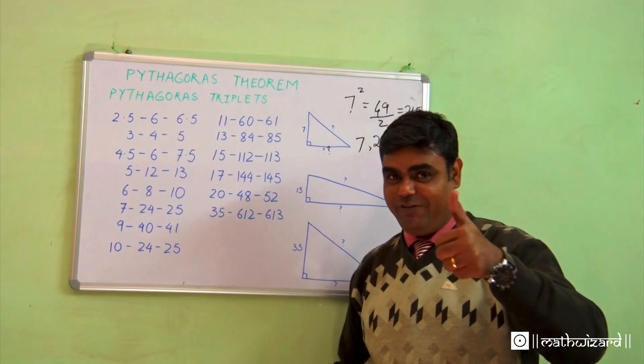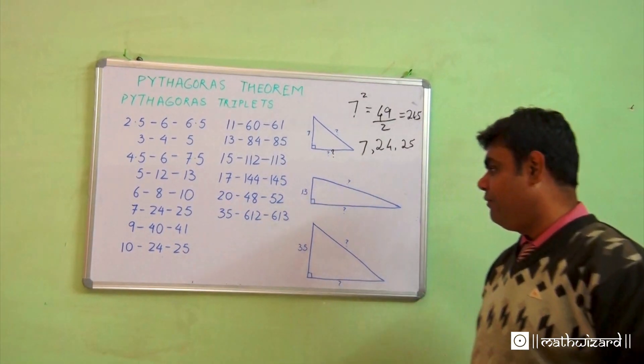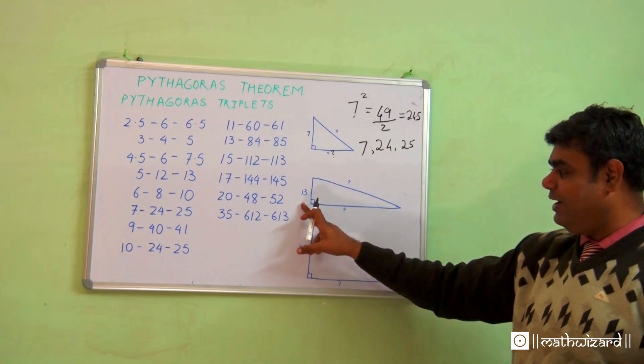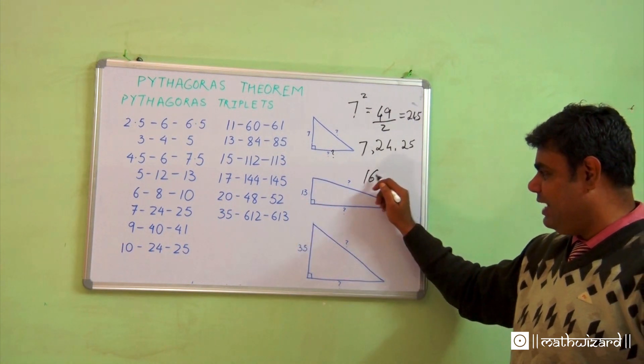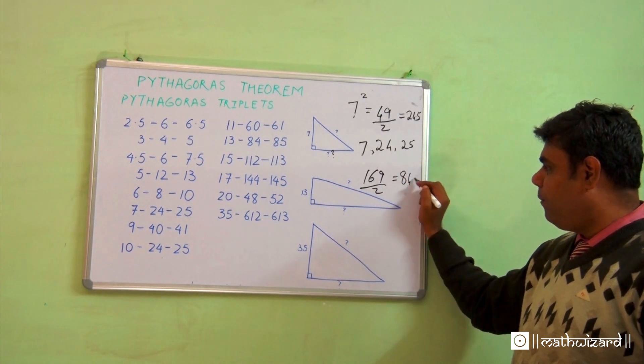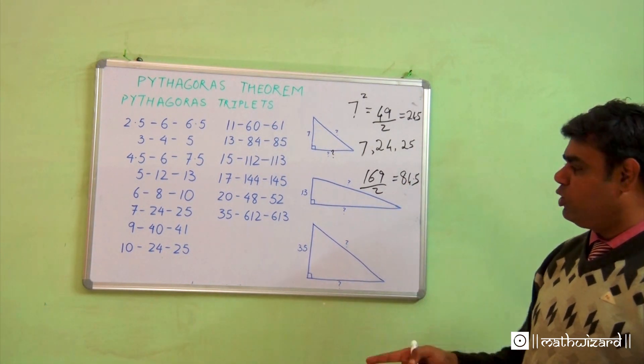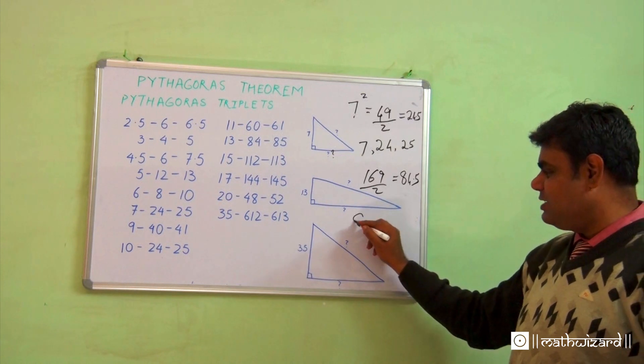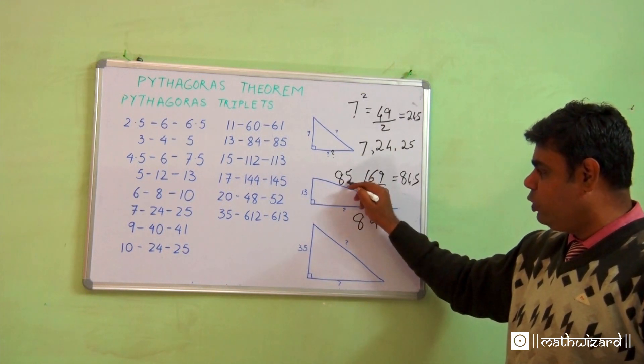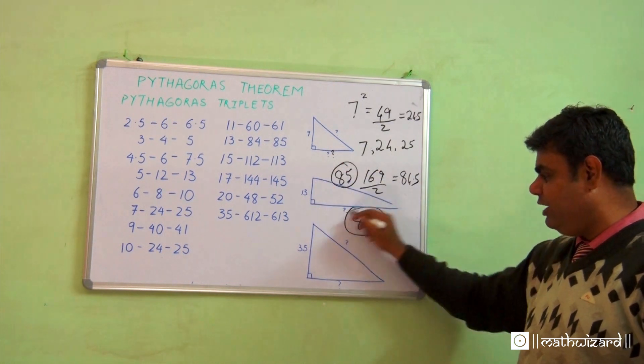Let's have another example. 13 square is 169, the half of which is 84.5. I can conclude this side is 84, and the bigger side will be 85. I need not even solve it.